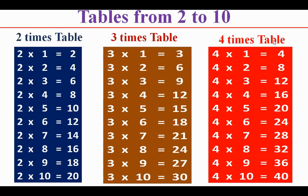4 times table: 4 1s are 4, 4 2s are 8, 4 3s are 12, 4 4s are 16, 4 5s are 20, 4 6s are 24, 4 7s are 28, 4 8s are 32, 4 9s are 36, 4 10s are 40.